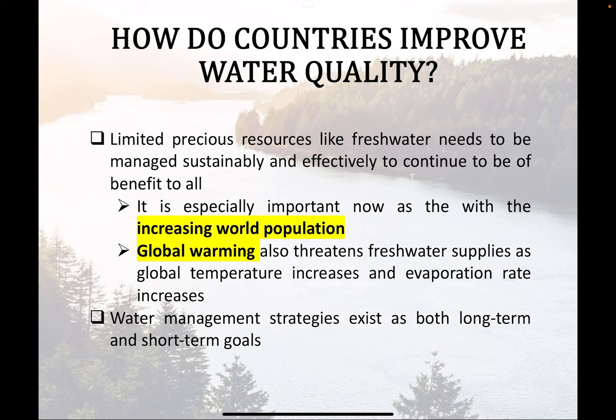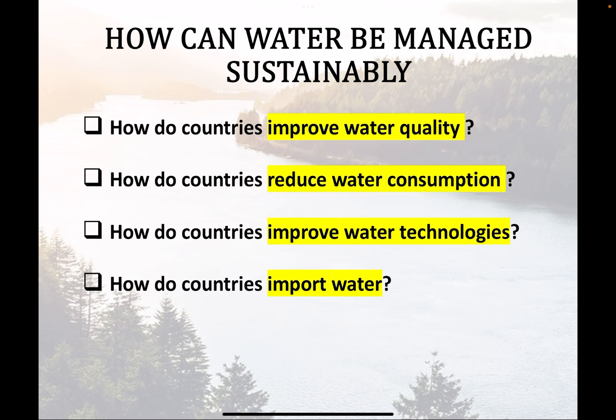We will be looking at four areas: how countries improve water quality, how countries reduce consumption, what kind of technology has been developed, and whether Singapore is the only country using such technology. We'll also look at whether there are options to import water — either from within a large country or by buying water from somewhere else.